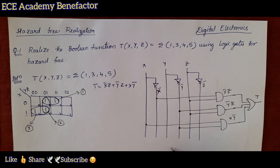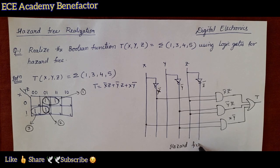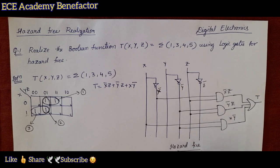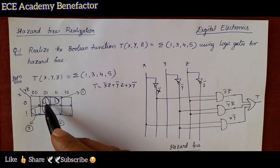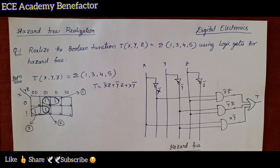Now give all three terms to an OR gate to get the function f. This is the hazard-free circuit. It is hazard-free because we have done one overlapping of the groups in the K-map.